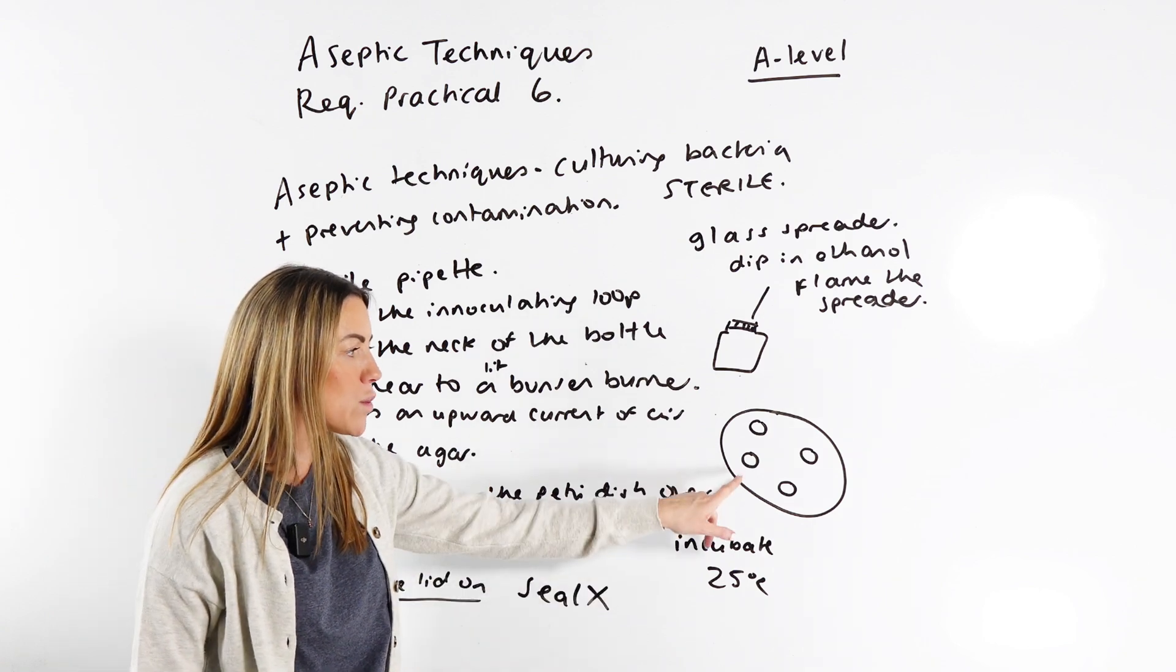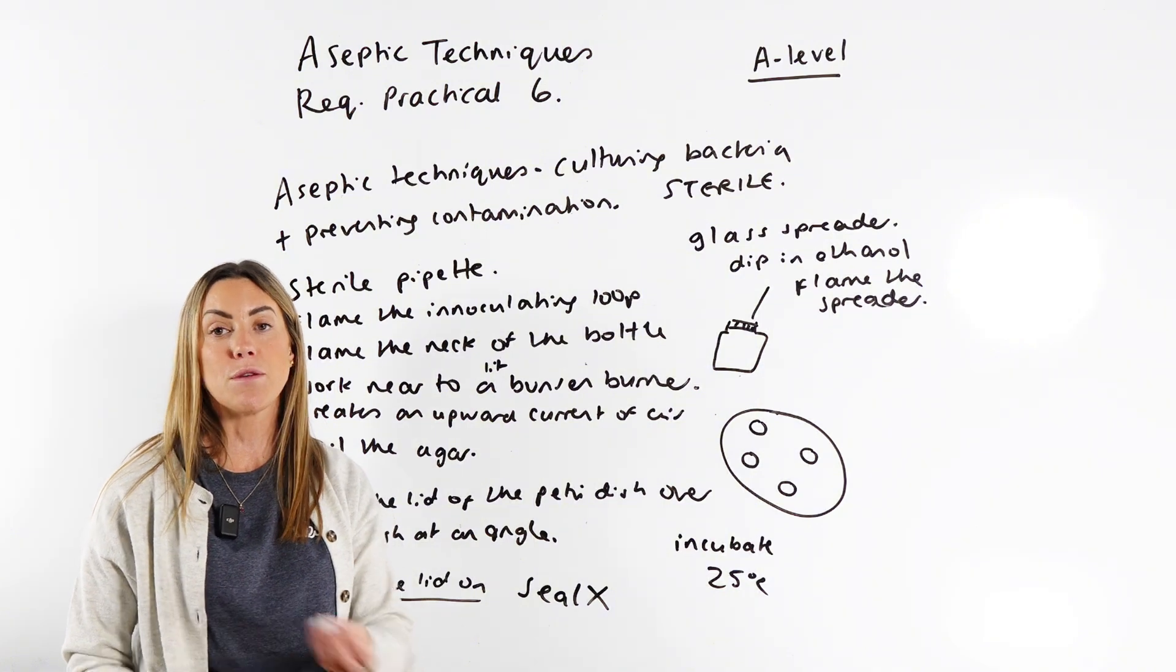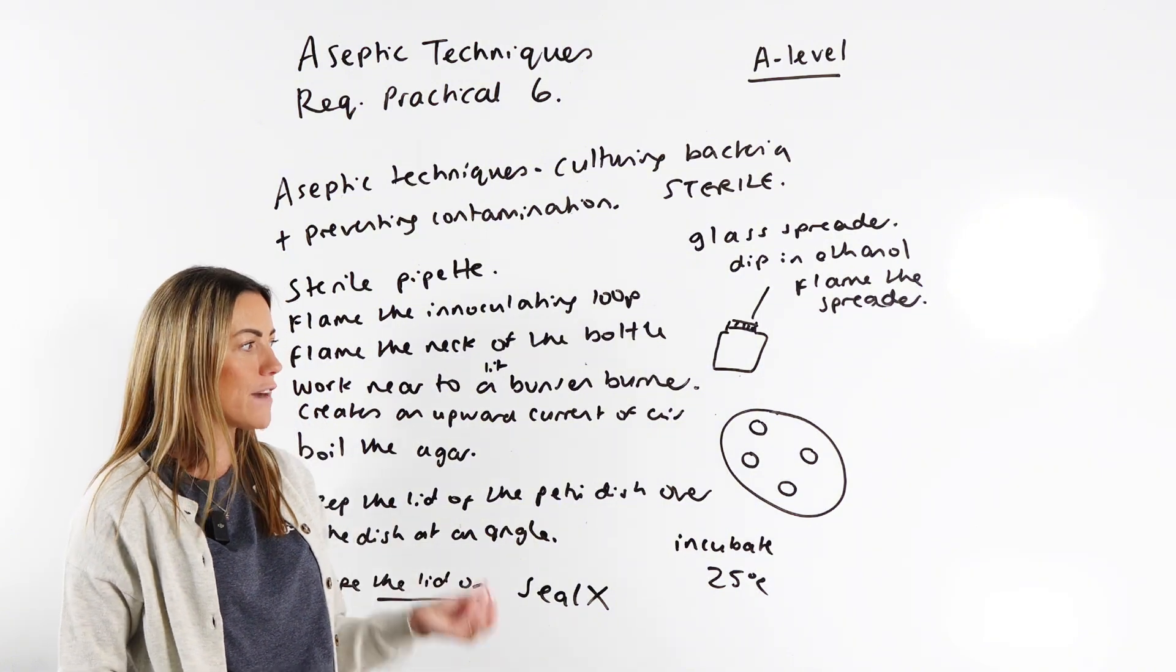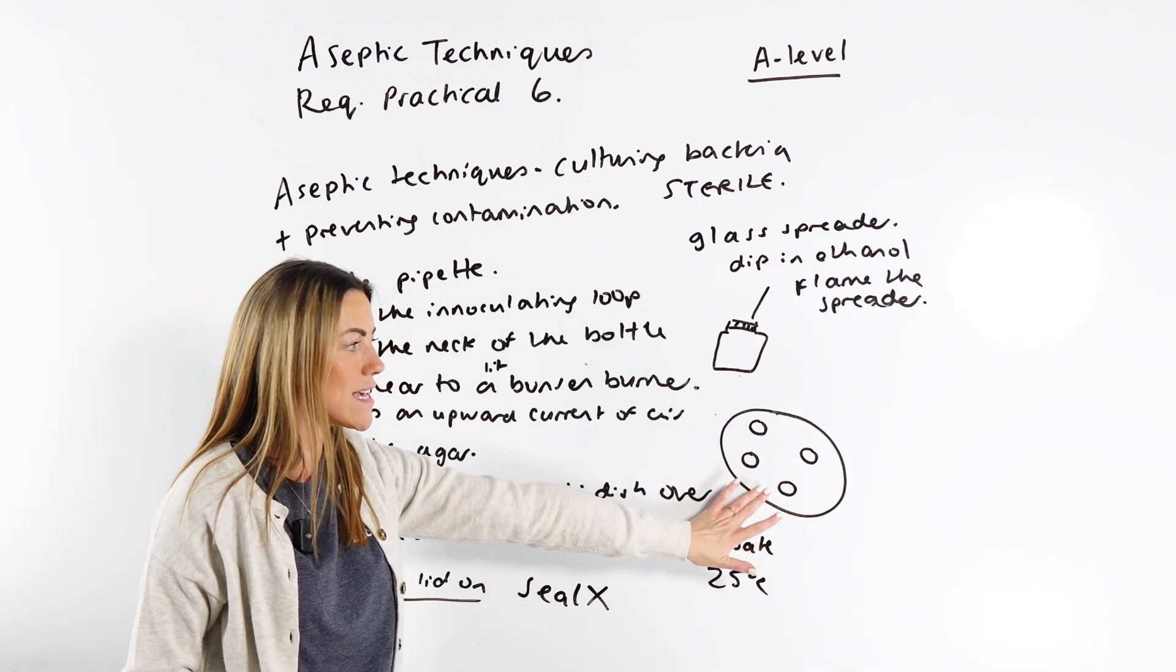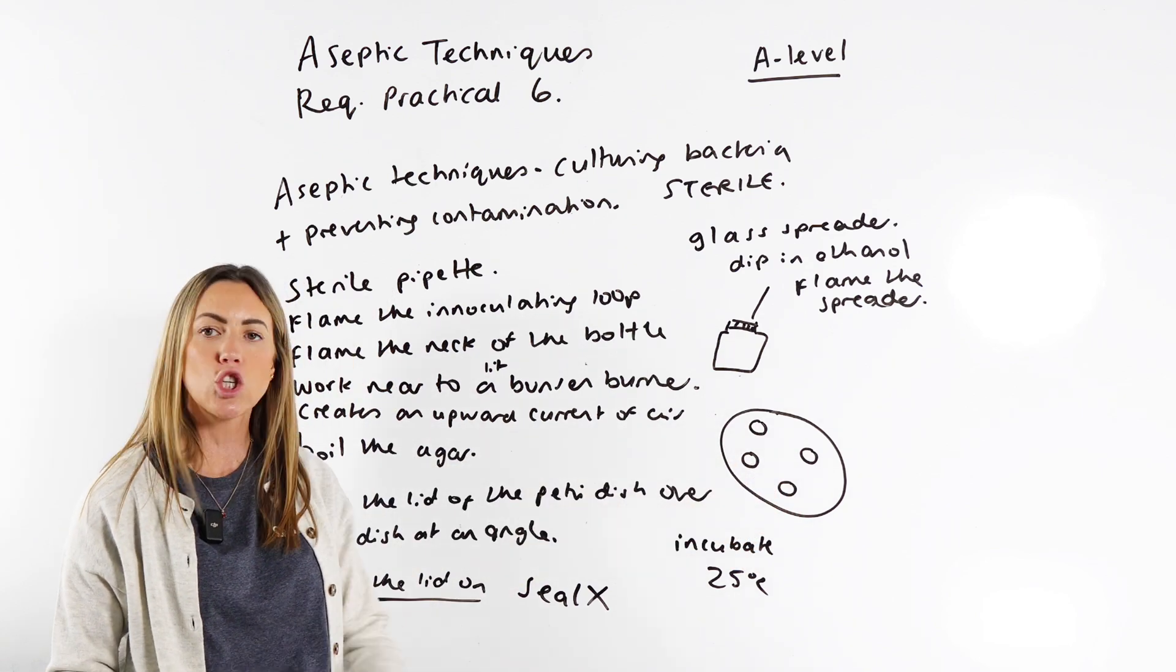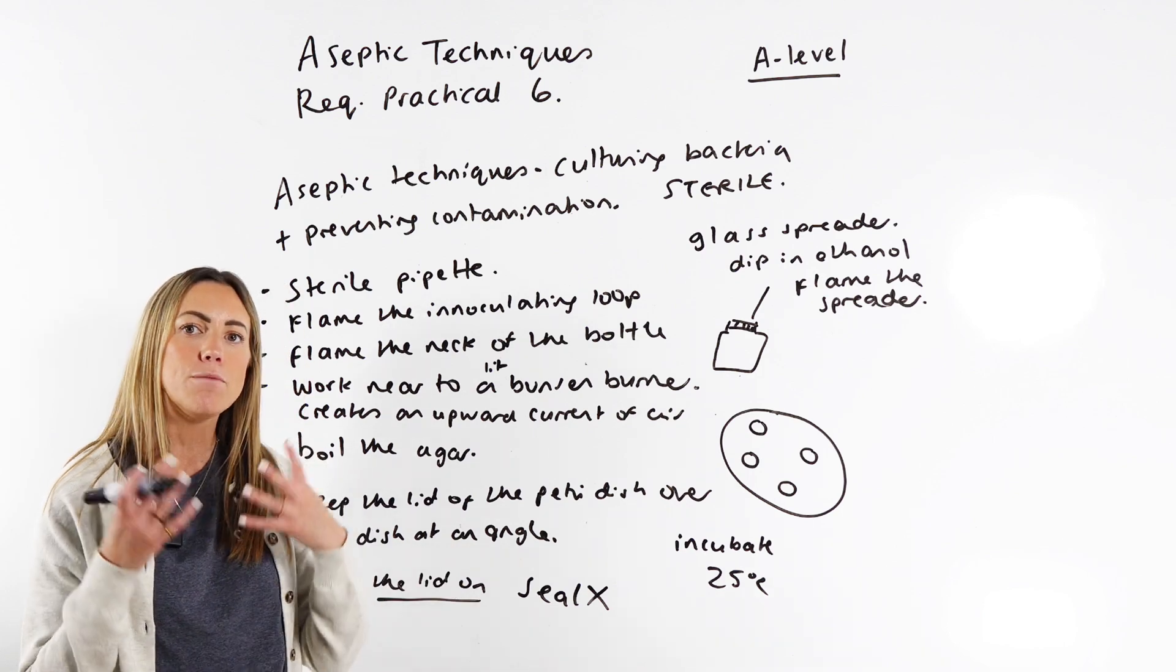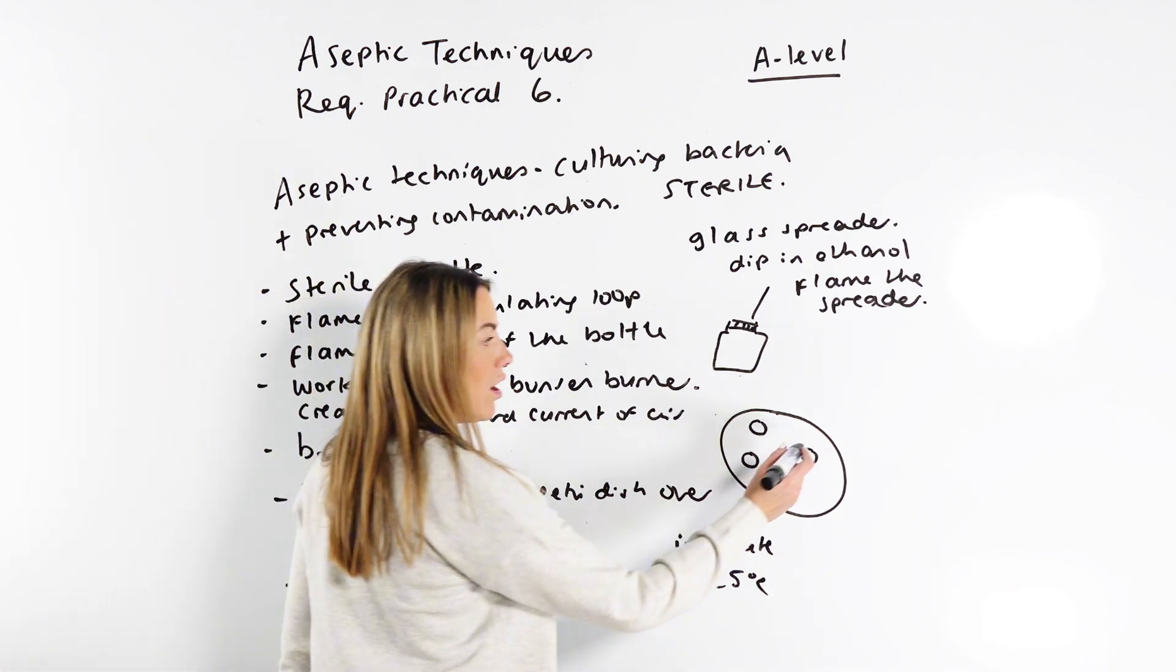But when you do this, you're probably going to use tweezers to put those filter paper discs on. Tweezers are made of metal, so the best way to sterilise those is to pass them through a Bunsen burner flame. You put your discs onto your agar before you tape it shut, before you incubate it. And when you get your dish back, you may see zones of inhibition. So let's just draw one on.